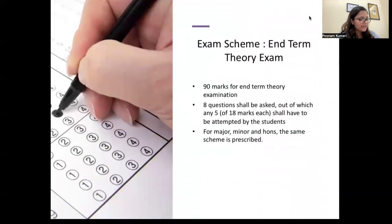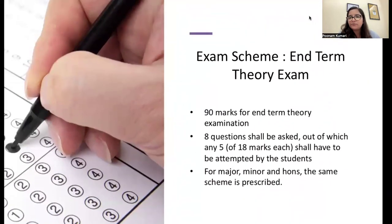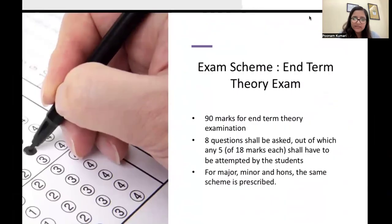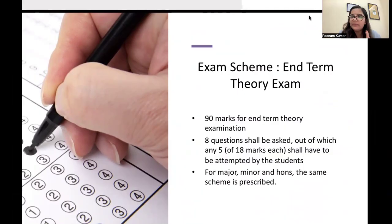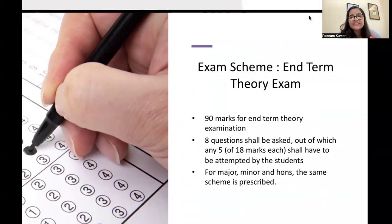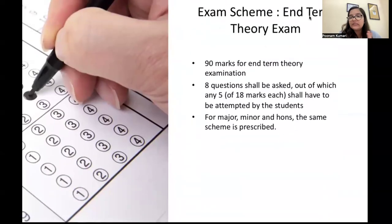Regarding the exam pattern, the end-term paper will be of 90 marks. The university has suggested that eight questions will be asked, out of which you must attempt five questions. Each question carries 18 marks, totalling 90. This same scheme applies to Major, Minor, and Honours students.